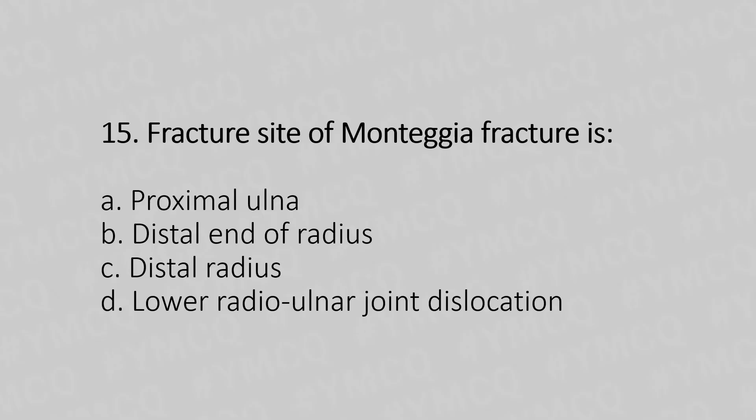Question 15: Fracture site of Monteggia fracture is — Option A: proximal ulna. Option B: distal end of the radius. Option C: distal radius. Option D: lower radio-ulnar joint dislocation. The answer is option A — proximal ulna.